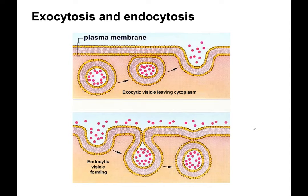We will talk a lot about transport across membranes in chapter 8. I also want you to remember that in addition to transport proteins located in the plasma membrane, cells can bring in or remove larger objects or bulk amounts of proteins in and out of a cell by exocytosis and endocytosis.